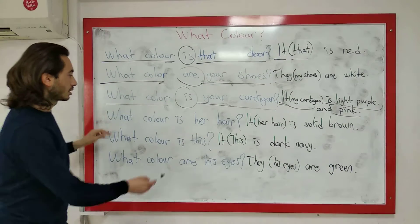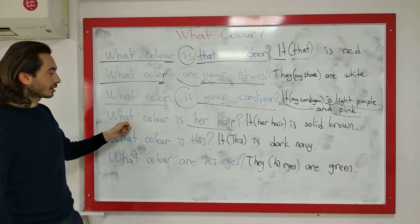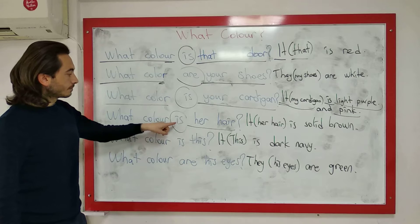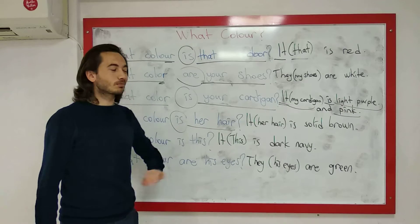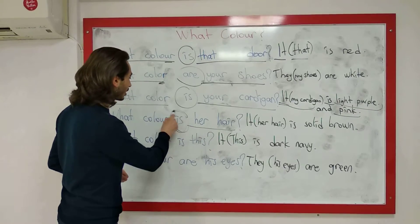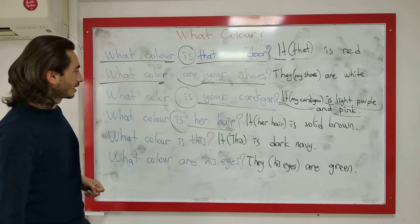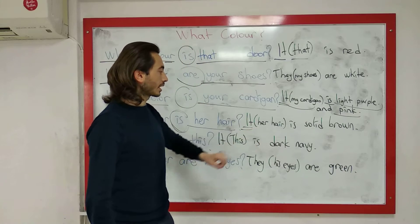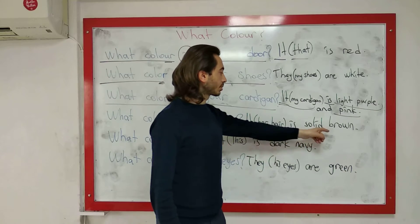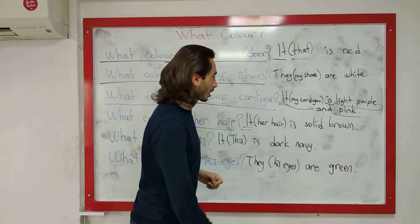What color is her hair? Onun saçı ne renk? Hair sayılamayan bir isimdir, bu yüzden her zaman 'is' kullanılır — 'are' değil. Cevap verirken: It is solid brown or her hair is solid brown. Solid brown — gerçek kahverengi demek, yani açık da değil, koyu da değil tam kahverengi.